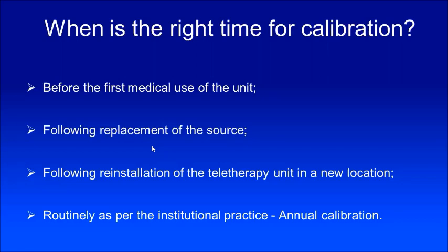Is that all? No. Most importantly, routinely as per institutional practice — that is, annual calibration. Some institutions do it every six months. We also do this very routinely — weekly and monthly — but there we use an ion chamber that was cross-calibrated against the one calibrated in a secondary standard dosimetry laboratory. We don't use the one calibrated in a secondary standard dosimetry laboratory for regular dose measurements, because that is something precious. We keep it and use another dosimeter cross-calibrated with it for our regular dosimetry verification.